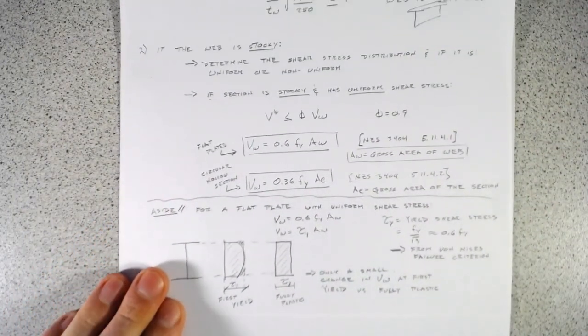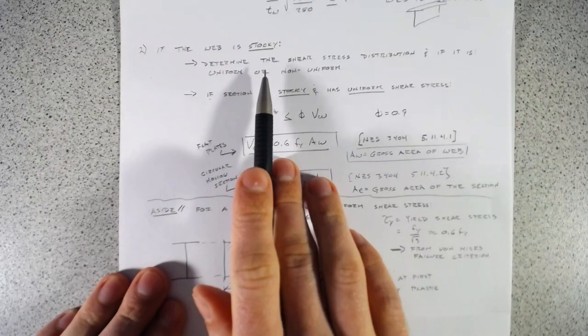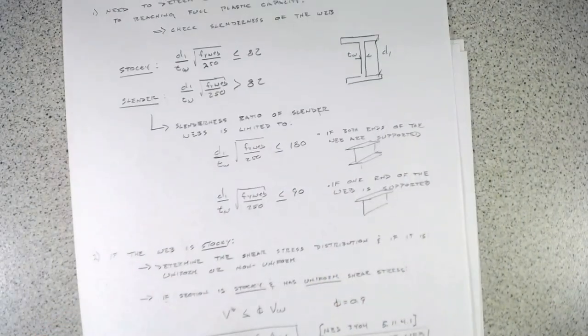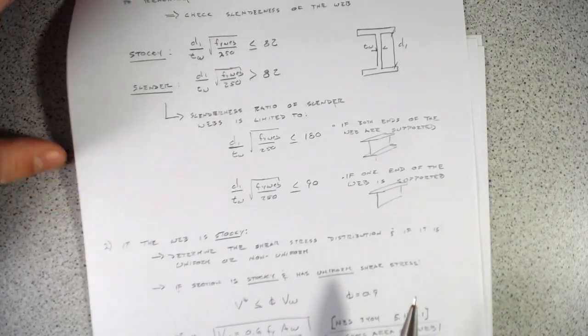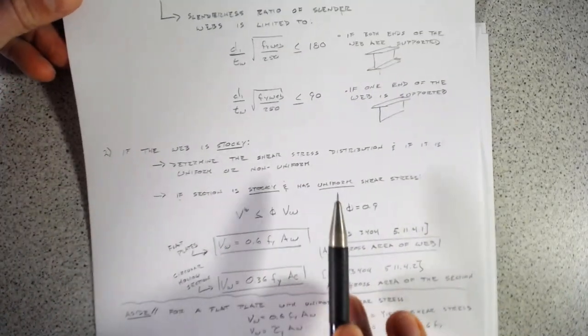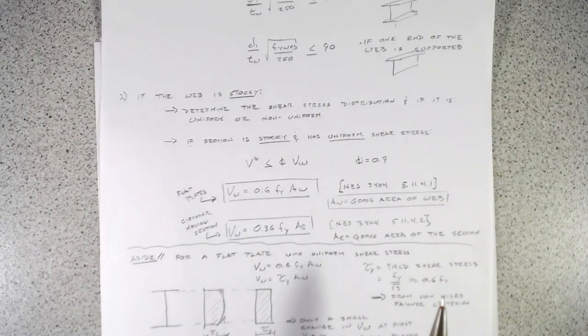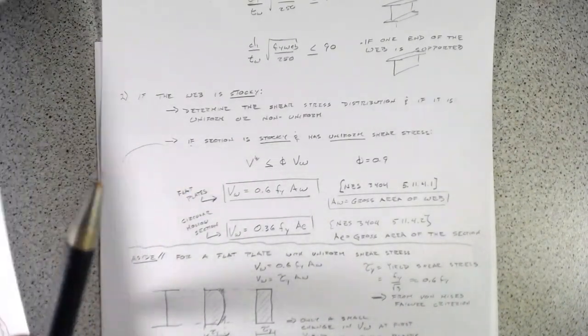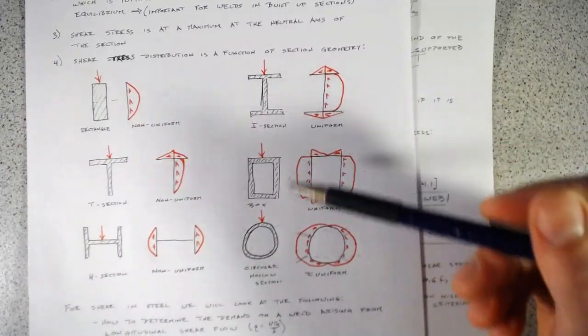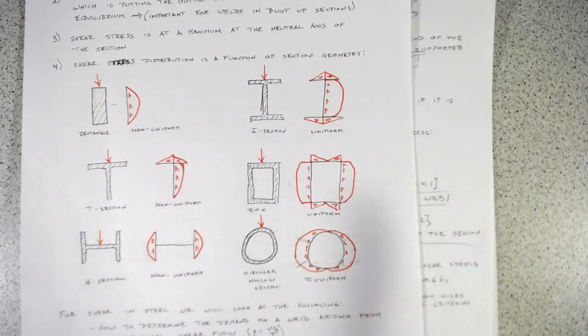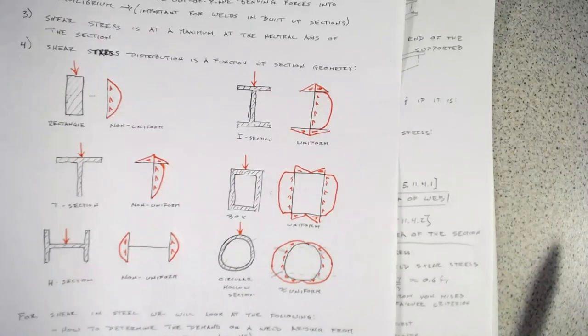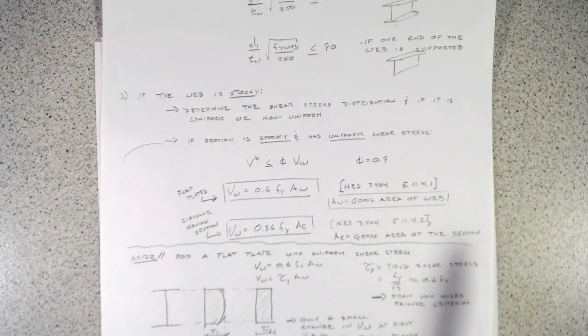So for a stocky web with slenderness ratio less than 82 and a uniform shear distribution — such as an I-section, box section, circular section, or a channel loaded parallel to the web — we simply use Vw = 0.6 × Fy × Aw.